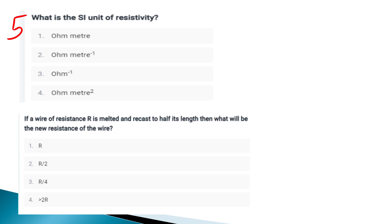If you ask what is the SI unit of resistivity — the resistivity unit is ohm-meter. Next problem: if a wire of resistance R is melted and recast to half its length, what will be the new resistance of the wire?